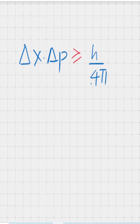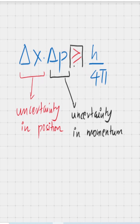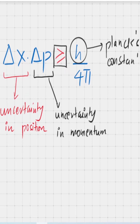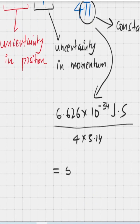So what's this equation actually saying? Well, on the LHS you have a product of two uncertainties — uncertainty in position and uncertainty in momentum. And this product has to be equal to or greater than h over 4 pi, which is a constant because h is Planck's constant and pi is a constant as well. So when you plug in the values on the RHS, you get 5.27 into 10 to the power of minus 35 joule into second.